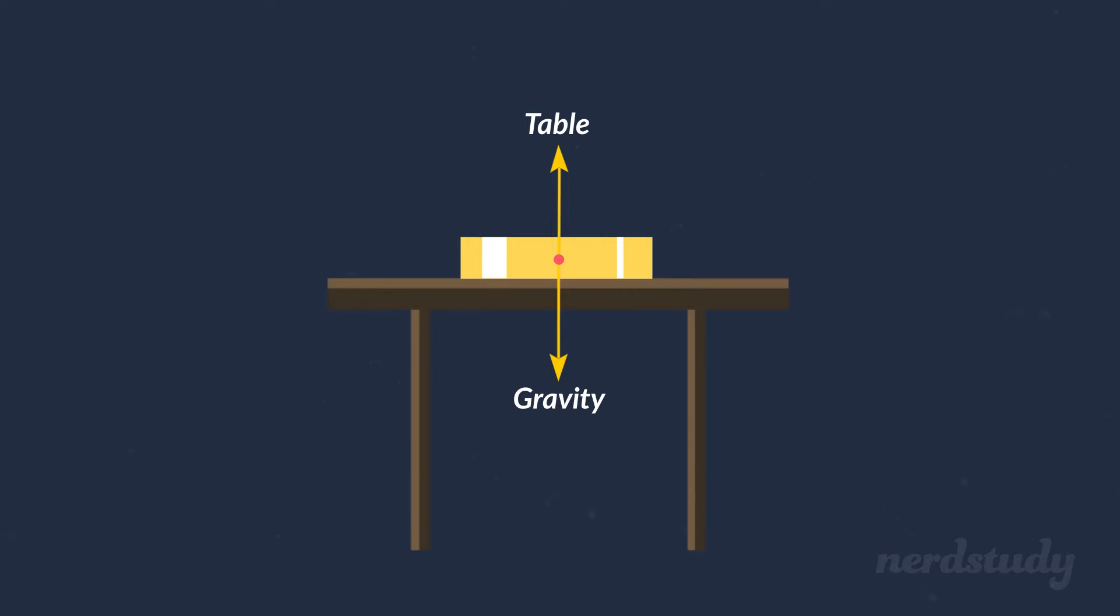Now, that sounds familiar, doesn't it? There's a force acting downward, namely gravity, and there's a force that's exactly the same in magnitude but in the opposite direction. They cancel out exactly and the result is that the book doesn't move at all.